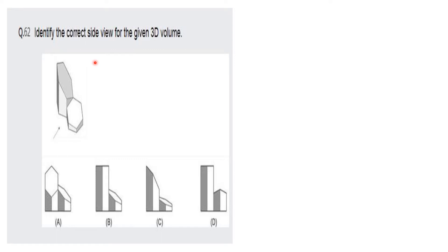If we identify the correct side view, there is a shaded region on the left side — shaded, then white, alternating. If you look at the other side, it will be sloped. In option D it will not be sloped, but in option C it will be sloped. One shaded region, then white, then shaded, then white — the slope is correct.